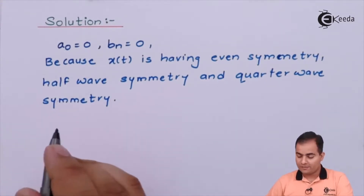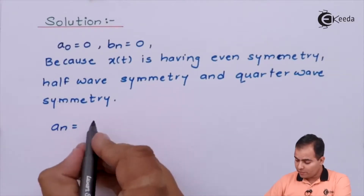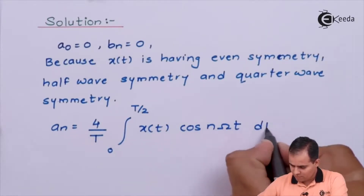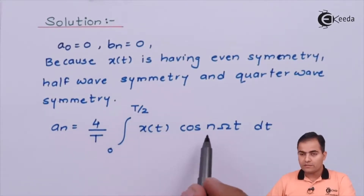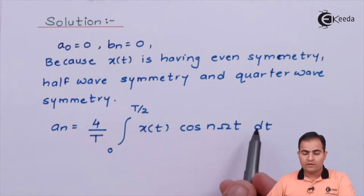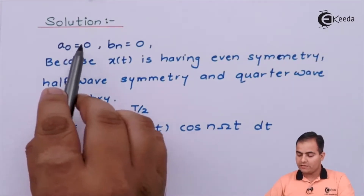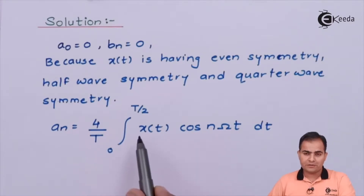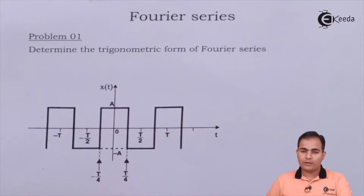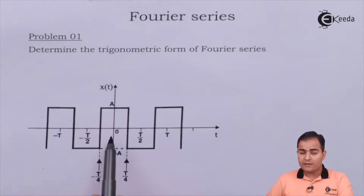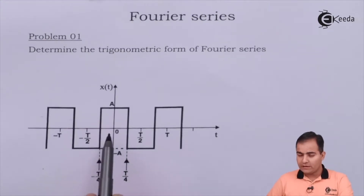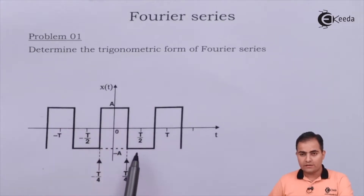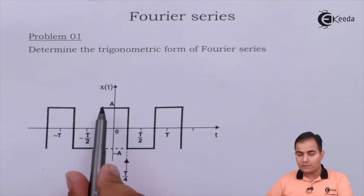We are going to calculate only the last coefficient, that is aₙ. The aₙ formula is: (4/T) times the integral from 0 to T/2 of x(t) cos(nω₀t) dt. Our integration limit for aₙ is 0 to T/2, but in 0 to T/2 our x(t) changes its value from A to minus A.